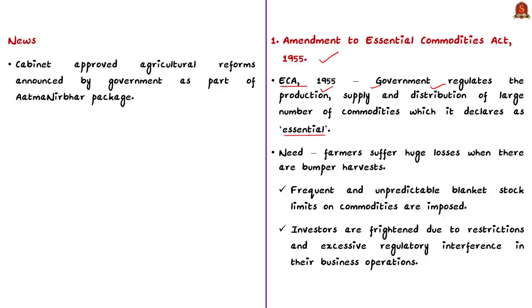Farmers suffer huge losses during bumper harvests, especially for perishable commodities, because of inadequate storage facilities. Frequent and unpredictable blanket stock limits on commodities are imposed using the Essential Commodities Act of 1955. Frequent government intervention is considered one of the reasons for lack of investment in cold storage, warehouses, and related processing, as entrepreneurs and private investors are frightened by restrictions and stock limits.